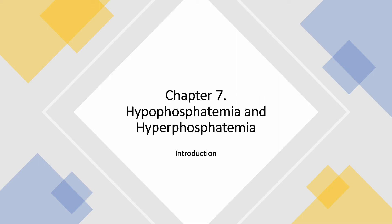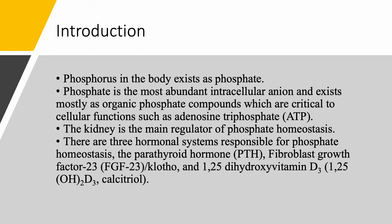We're going to discuss hypophosphatemia and hyperphosphatemia. This lecture is an introduction to the subject. Phosphorus in the body is not going to be free phosphorus — it's going to exist as phosphate. Phosphate is very abundant. It's the most abundant intracellular anion, and most of it is organic phosphate. These organic phosphate compounds are critical to cell function — everyone is familiar with ATP, adenosine triphosphate. Phosphate homeostasis is regulated by the kidneys, and we have three hormonal systems operating.